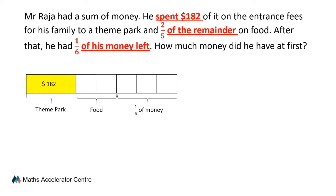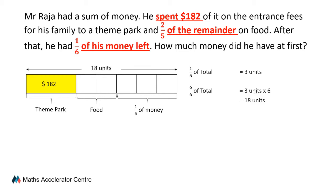That means these three remaining units are equal to one-sixth of his entire sum of money. From here, we can tell that one-sixth of his money is actually equal to three units. Therefore, if we want to find his entire sum of money — which is six out of six — we simply multiply three units by six, and this gives us 18 units.